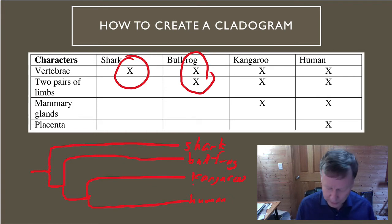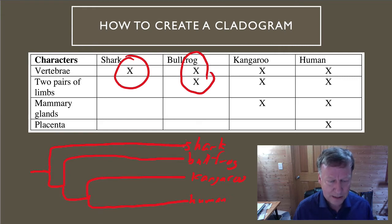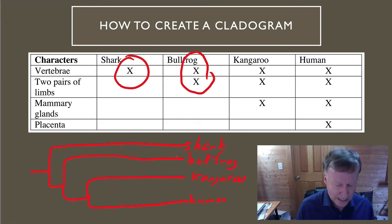One important thing when you draw the cladogram: all the lines should be the same length. If they're not the same length, that implies a species went extinct, because the line length is a measure over time.